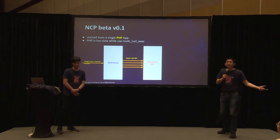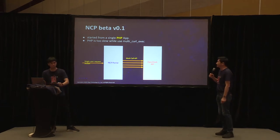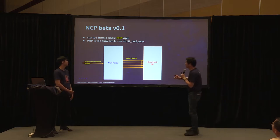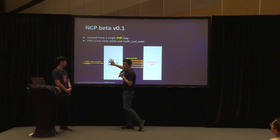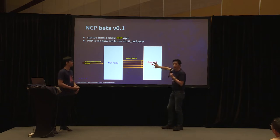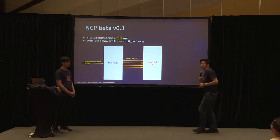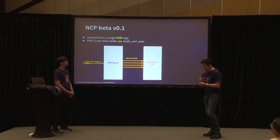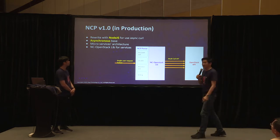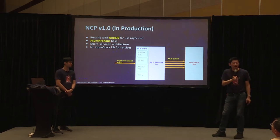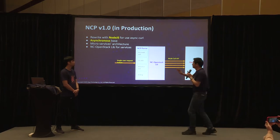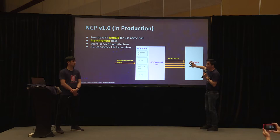We started with NCP beta version 0.1 using PHP. But with a single user request into the NCP portal, it had to call the OpenStack API multiple times, which slowed things down. It didn't work out. So we switched to Node.js as our second attempt, which we actually put into production. Node.js is good because it's asynchronous-based — it can do parallel things, like parallel API calls.